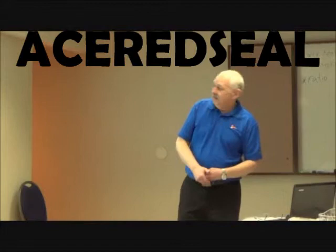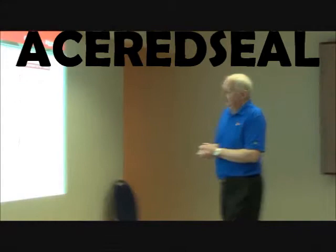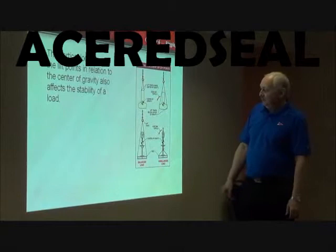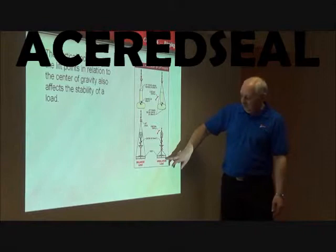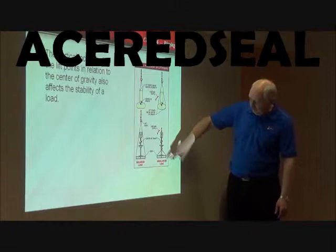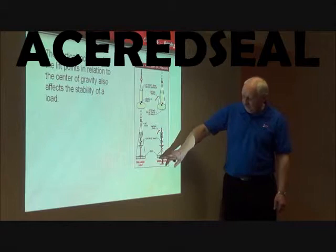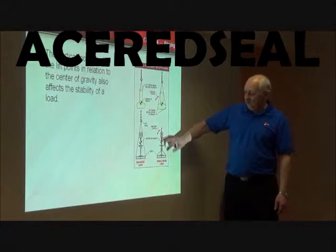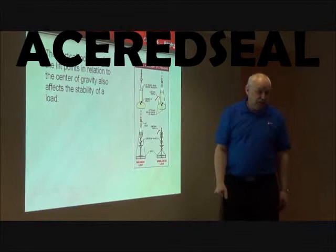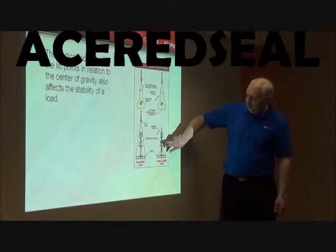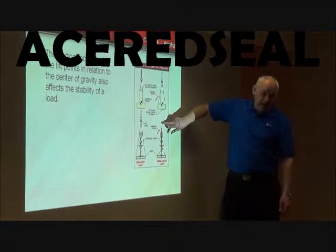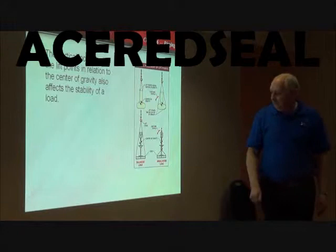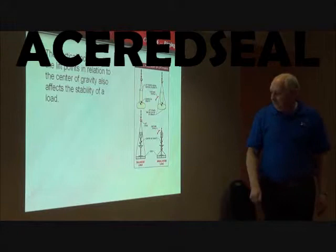There are three things to remember: the load must be over the center of gravity, the sling lengths can be different but still have equal load if it's over the center of gravity, and you have to be above it. Here's an example — someone put a drill press on a pallet and tried to lift it with a small sling below the center of gravity — it's going to tip. This would be the correct way; this would be the incorrect way of picking it up. Make sense? Yeah.